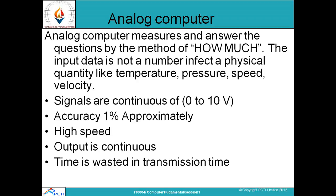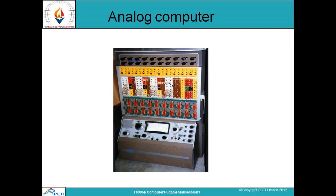An analog computer is one which measures and answers questions by the method of 'how much.' This 'how much' concept is what differentiates analog from digital computers. Analog computers deal with physical quantities like temperature, pressure, speed, and velocity. They use continuous signals, which are approximately 1% accurate, and they are high in speed. Their output is also continuous, just like the signals, but time can be wasted in transmission.